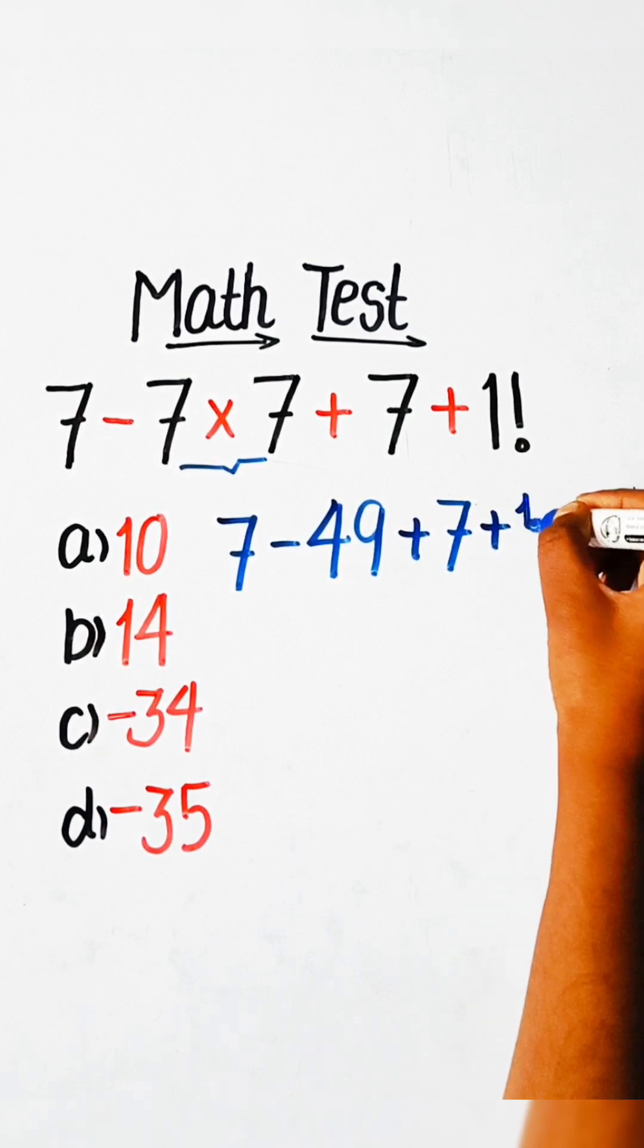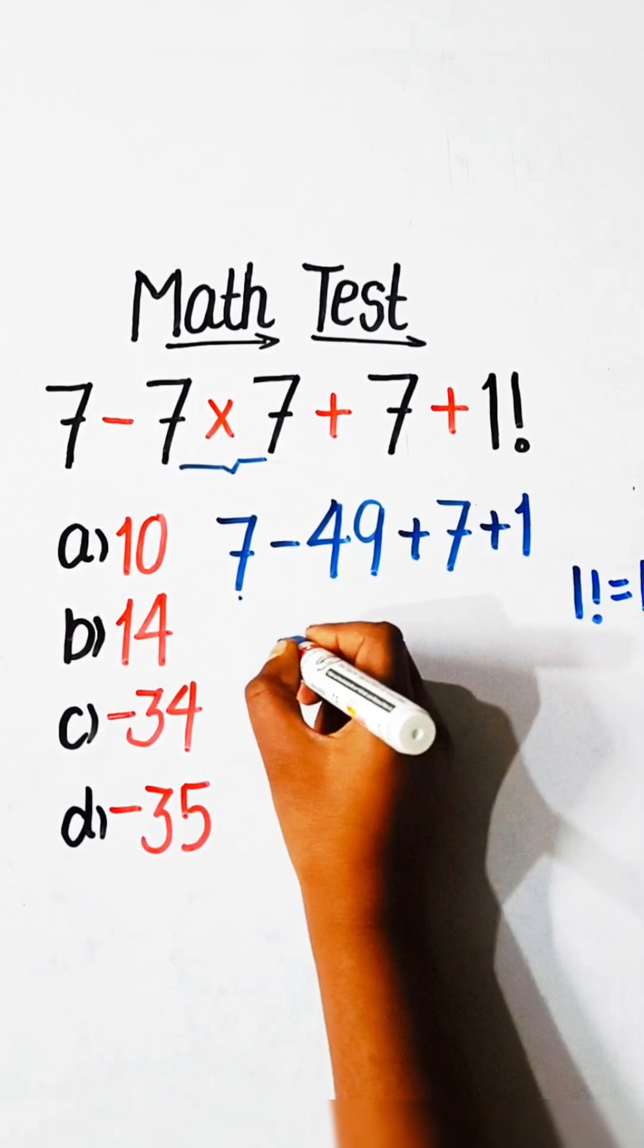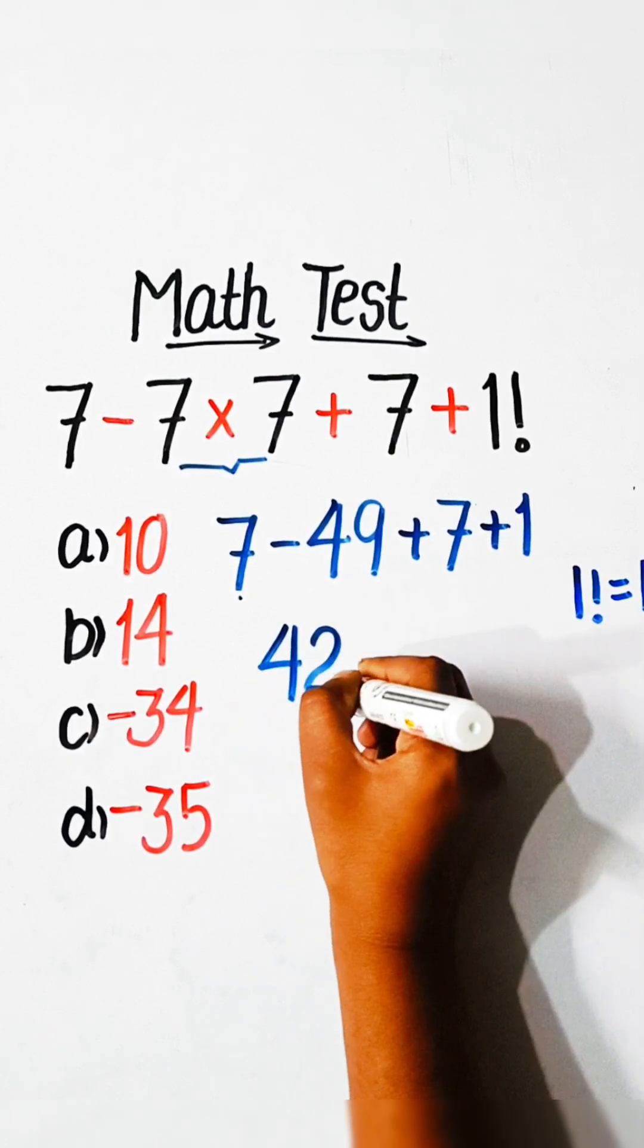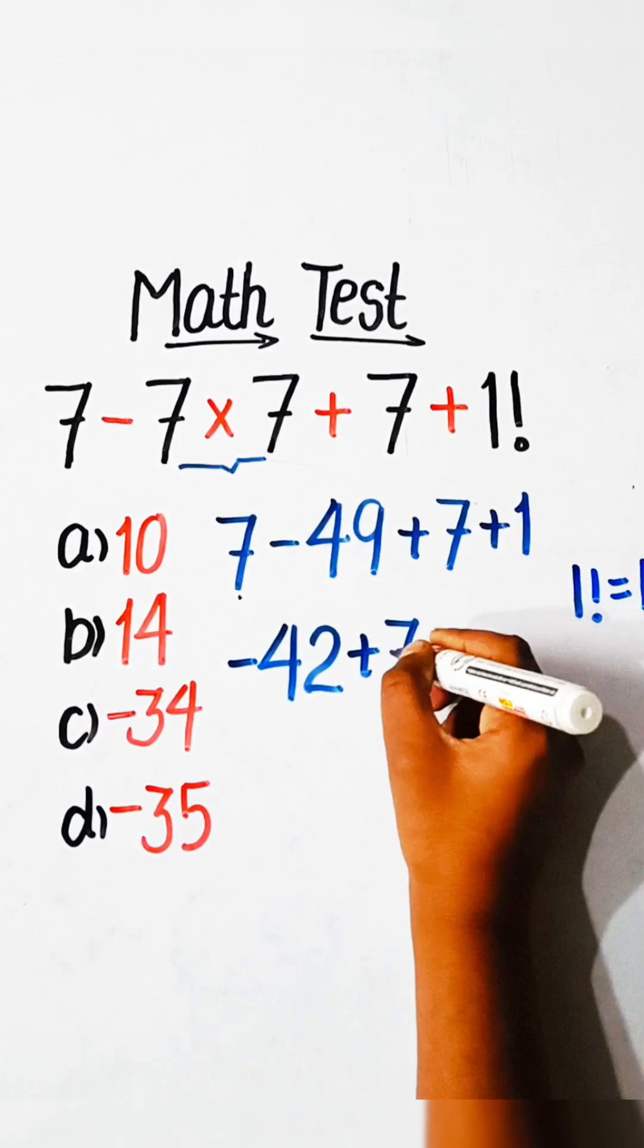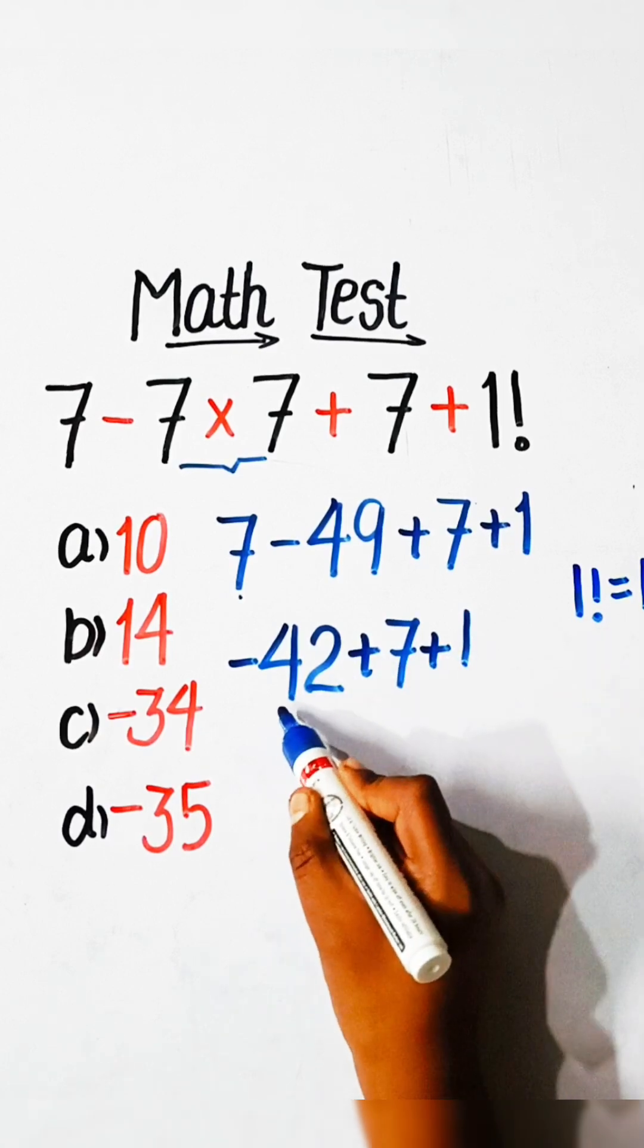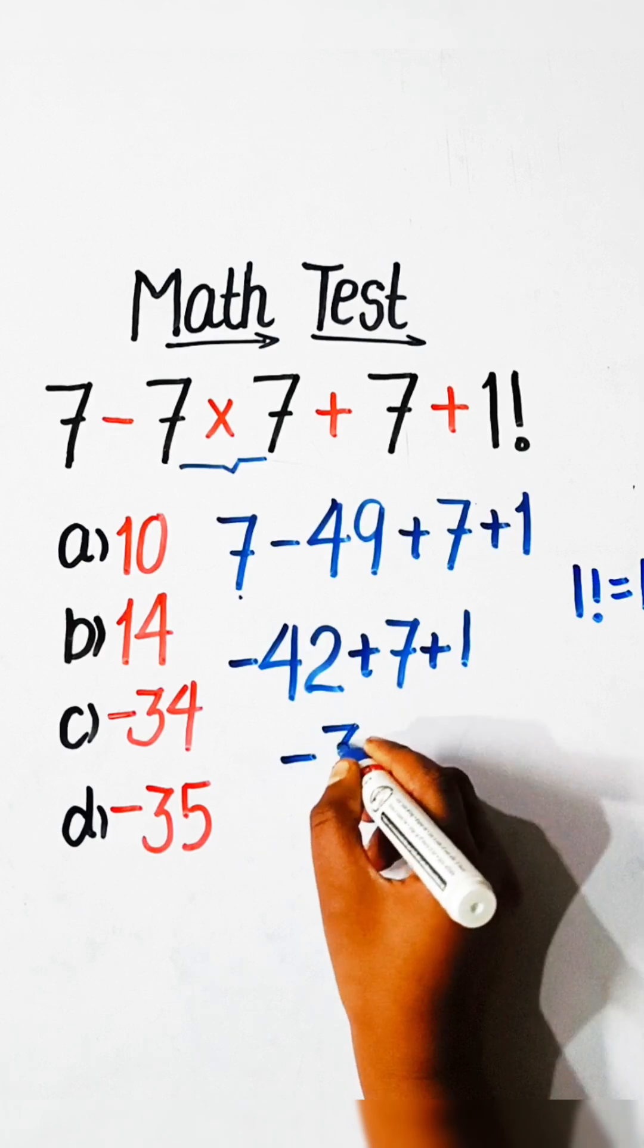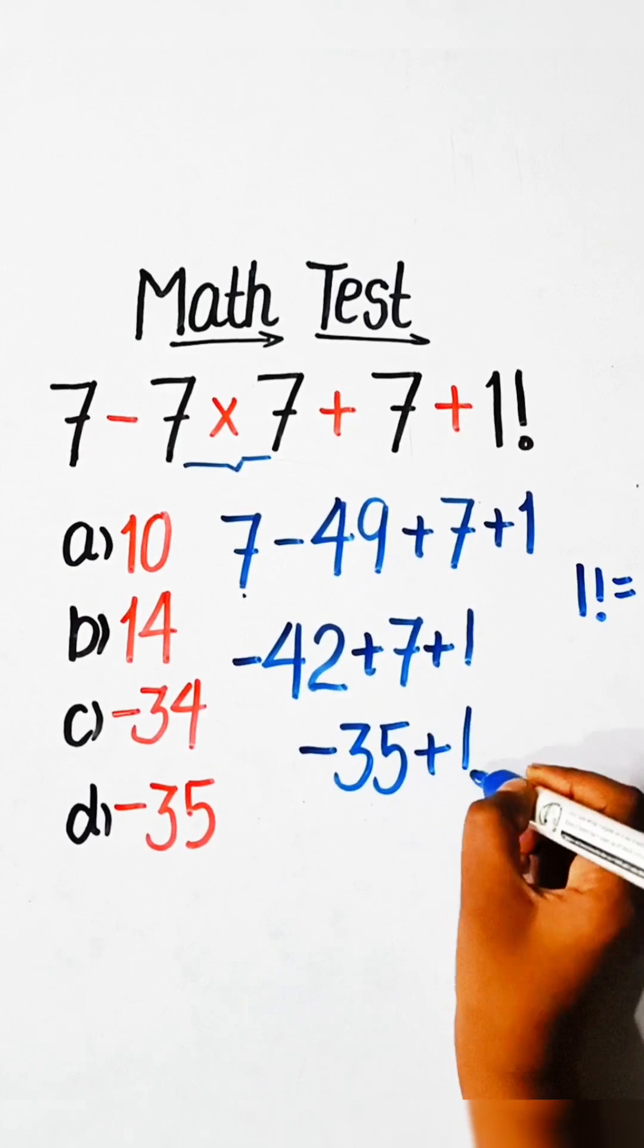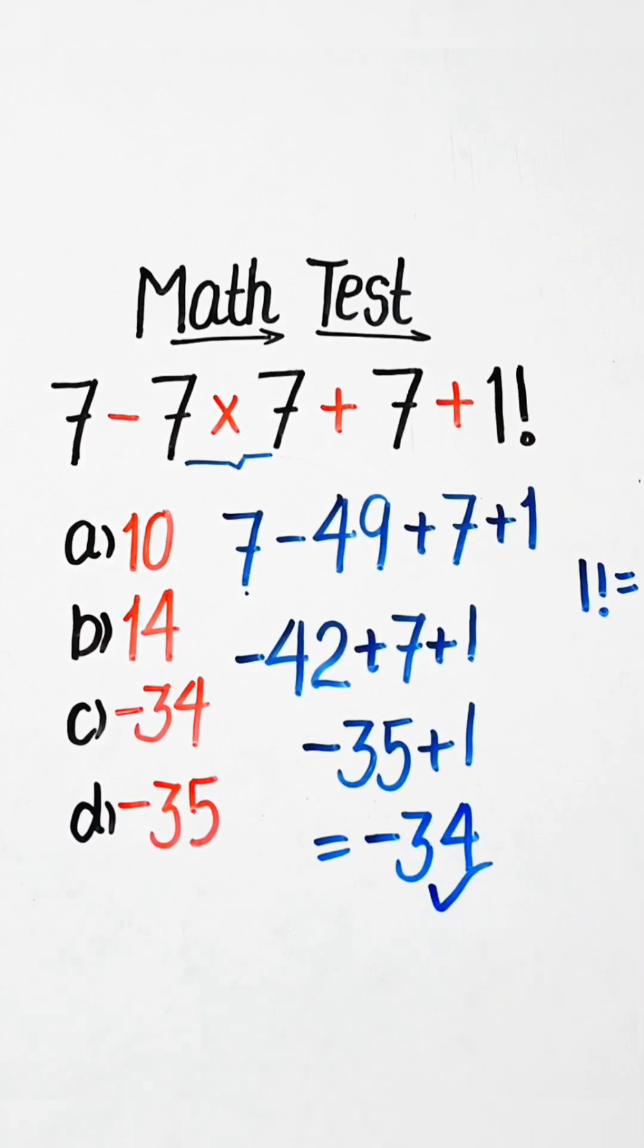Let's solve this: 7 minus 49 is 42, minus 42 plus 7 plus 1. So we have minus 42 plus 7, we have minus 30 equals to minus 35 plus 1. So minus 34 will be our correct answer.